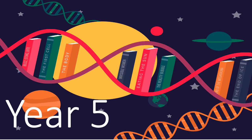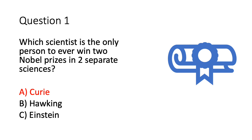On to the answers for year five, looking at our scientists. Question one: which scientist is the only person to ever win two Nobel Prizes in two separate sciences? The answer was Curie. Interestingly, Curie's daughter also won a Nobel Prize for chemistry later on. Curie's research into x-rays for surgery was so important during World War I — she also helped equip ambulances with x-ray equipment and even drove those ambulances to the front lines.